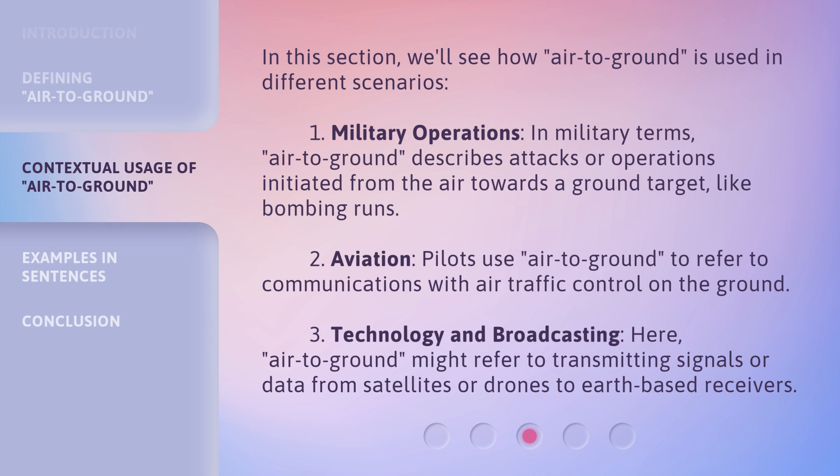Second, in aviation: pilots use air-to-ground to refer to communications with air traffic control on the ground. Third, in technology and broadcasting: here, air-to-ground might refer to transmitting signals or data from satellites or drones to Earth-based receivers.